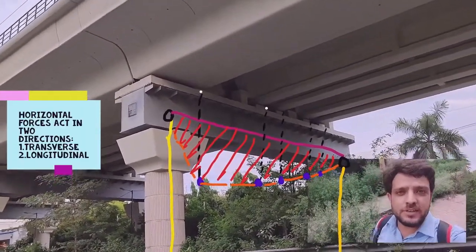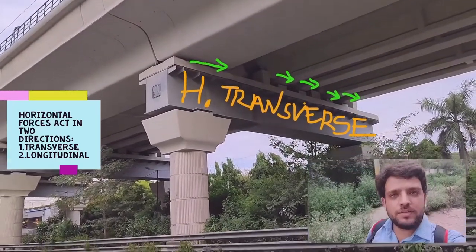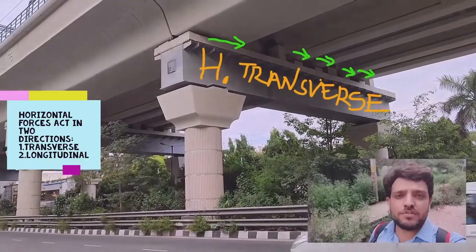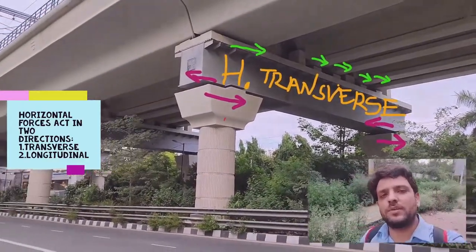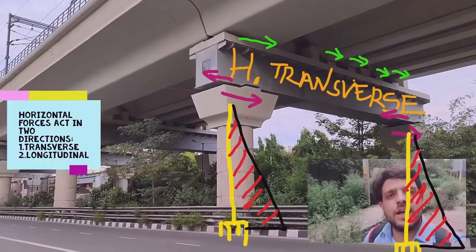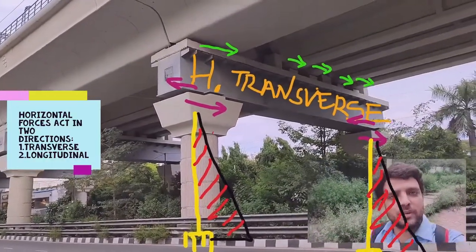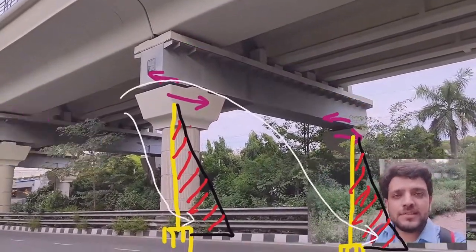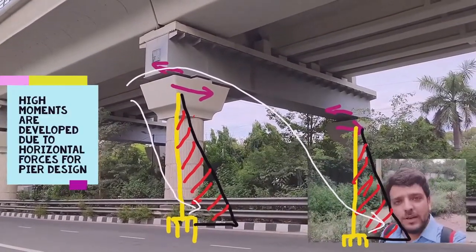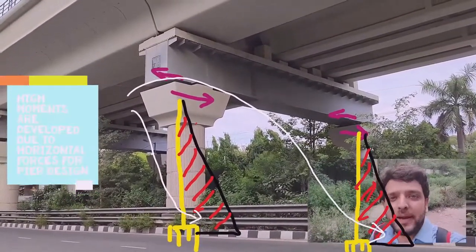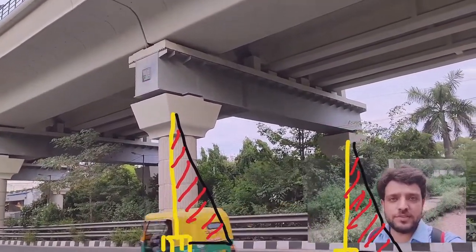All other horizontal forces — due to traction, braking of the live load (the metro load running above), as well as wind forces or seismic forces in transverse and longitudinal directions — are also acting at these bearing locations only. This is a typical example in which a portal beam is pinned at its head and supported by the vertical members of the frame.